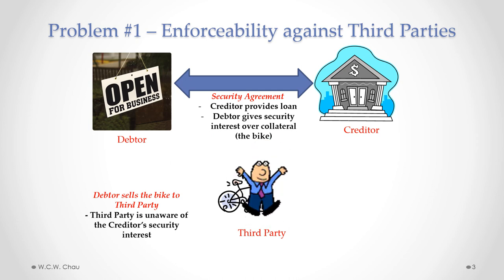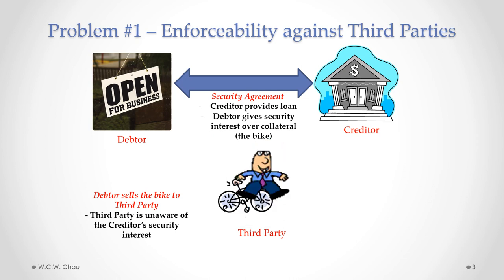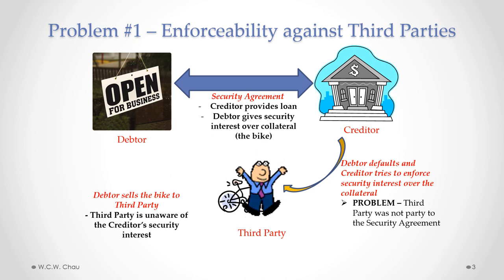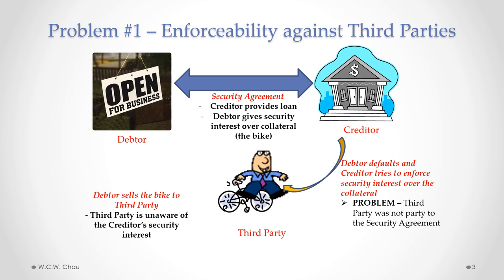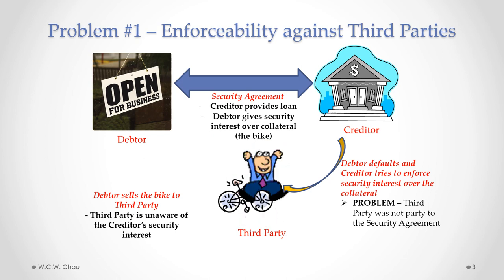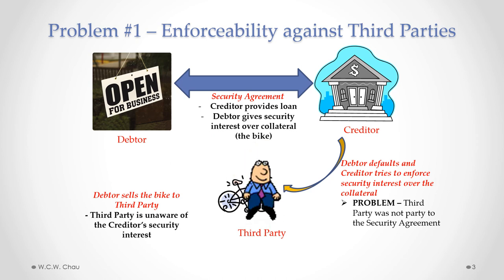This third party is totally unaware of the creditor's security interest over the bike. Then let's say the debtor defaults on its loan from the creditor. The creditor tries to enforce its security interest over the bike. The problem is that the third party who bought the bike was not a party to the security agreement, so is he bound by the security interest that the debtor gave to the creditor over the bike? That's our first problem.